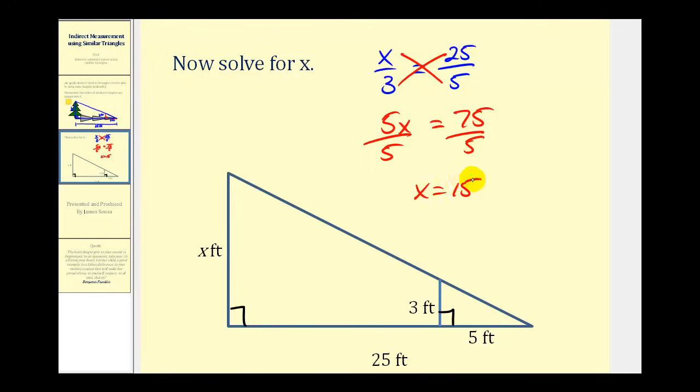So x equals fifteen which gives us the height of this tree without ever having to leave the ground. So that is pretty amazing that we can use the properties of similar triangles to determine lengths indirectly.